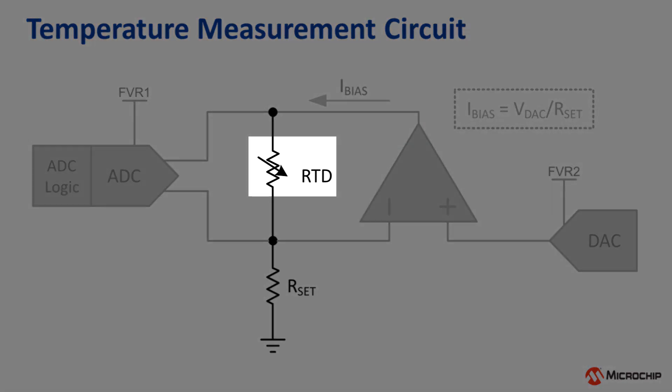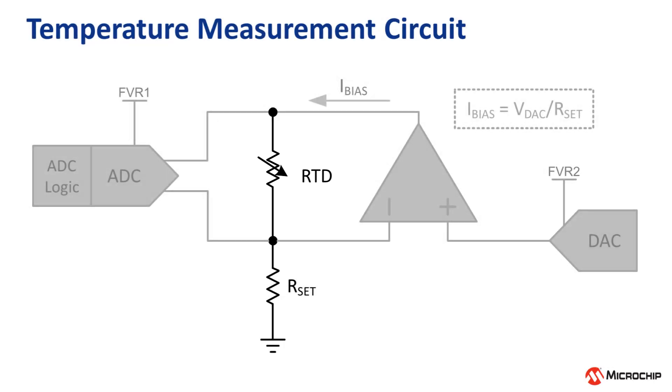I'm using a resistance temperature detector sensor element which changes resistance according to the temperature. To measure the RTD, I'll use one of the op-amp peripherals in the microcontroller to build a constant current bias source.